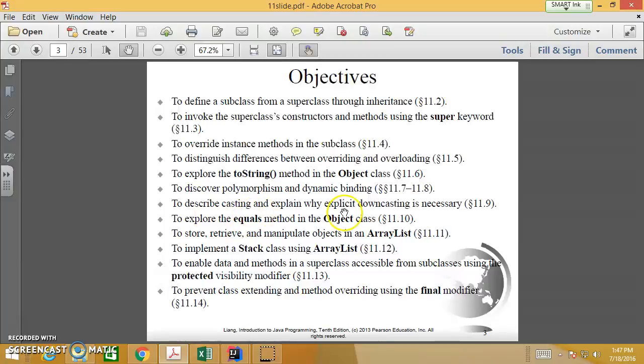To describe casting and explain why explicit downcasting is necessary. Casting is when you change the type. And when objects have many forms like this, then we have to change the types when you have to access different methods from different classes. And they also have implicit and explicit casting that we can look at.